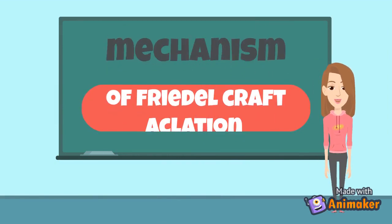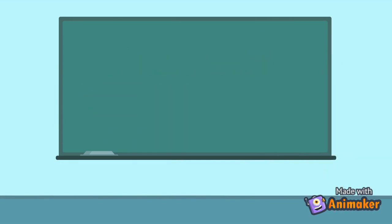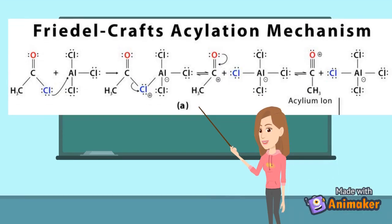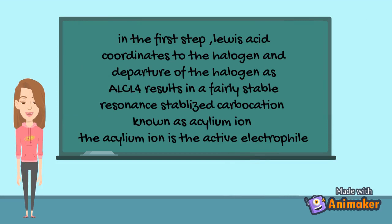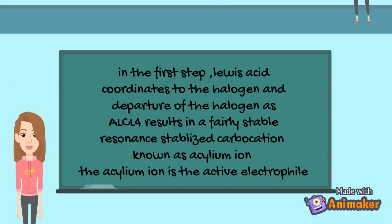Now, what is the mechanism of Friedel-Crafts acylation? To make it easier, let's take it step by step. First step: activation of the electrophile with Lewis acid. The Lewis acid coordinates to the halogen, and departure of the halogen as tetrachloroaluminate results in a fairly stable carbocation known as the acylium ion.